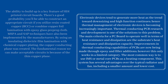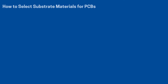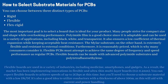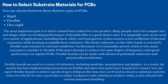When selecting substrate materials for PCBs, you can choose between three distinct types: rigid, flexible, and flex-rigid. The most important goal is to select a board that is ideal for your product. Many people strive for compact size and shape while overlooking performance. Polyamide film is a good choice since it is adaptable and can be used in a variety of applications, including black, white, and transparent. It also ensures a low coefficient of thermal expansion while maintaining acceptable heat resistance.